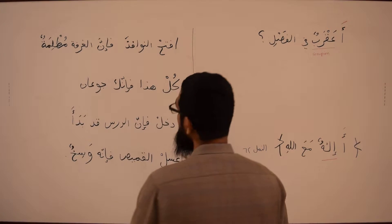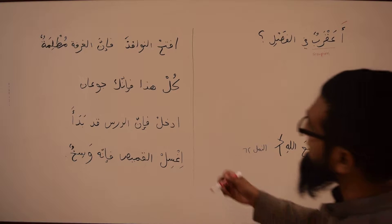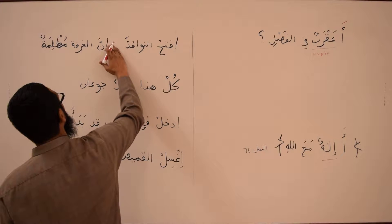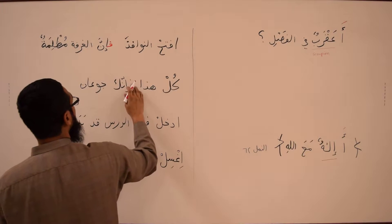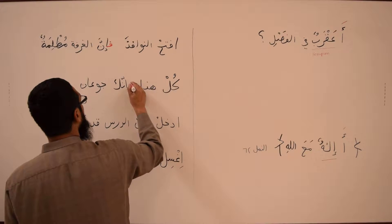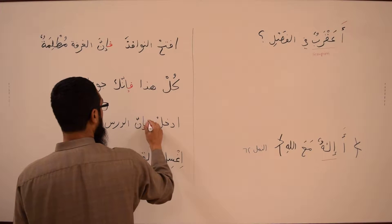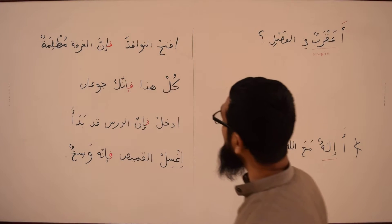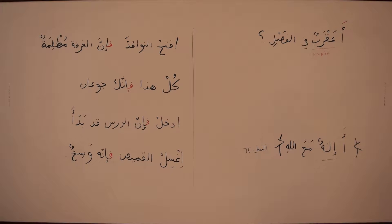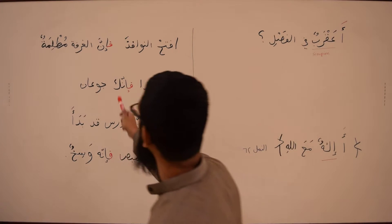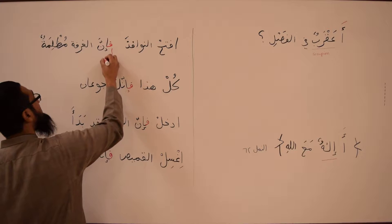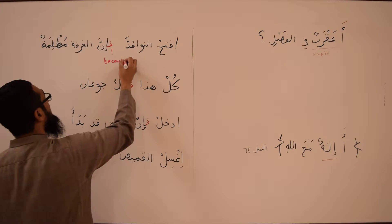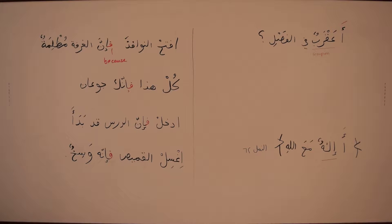The other concept is the Fa that we see in many sentences. For example: 'Iftahil nawafid' — 'Open the windows' — 'Fa inna al-ghurfata mudlimatun' — 'Because the room is dark.' The Fa gives the meaning of 'because' — or more emphatically, 'because for sure the room is dark,' since inna is used for emphasis.